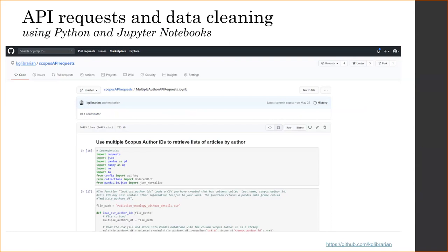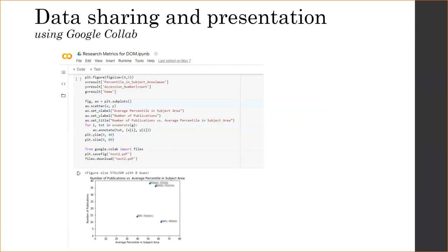Data managers often use different tools depending on the needs of the groups involved. In one case, the group was familiar with Google tools, so instead of Jupyter Notebooks, I used Google Colab to share data, code, and visualizations. They were interested in various metrics and visualizations — such as a scatter plot showing number of publications against average percentile by subject area for documents published by faculty members in their department. Those are just some examples; there are many ways a data manager fulfills their role. I'll pass it off to Amy Suter to share her experiences with the analyst role.